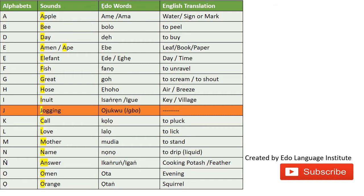For B, we have 'BOLO' which means to peel. Please note: 'BOLO' means to peel something with your bare hands — for instance a tangerine, orange, or banana. But 'BALO' also means to peel, with the difference being that 'BALO' requires a device, like a knife or a machete. So 'BOLO' is usually something you do with your hands.